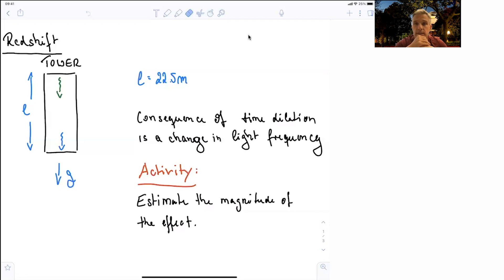This is basically an accelerating reference frame. The length of the tower is 22 meters. I would like you to get a feeling for how big this effect can be, the effect of redshift. Please try to work this out.